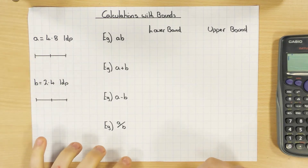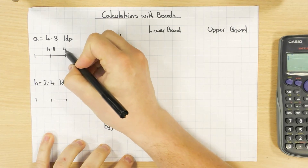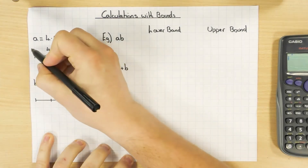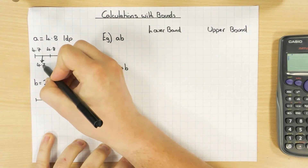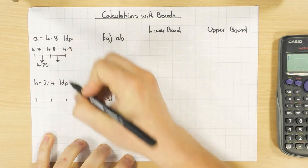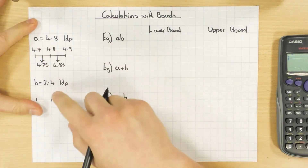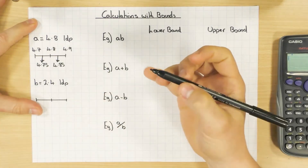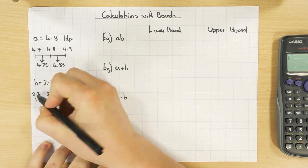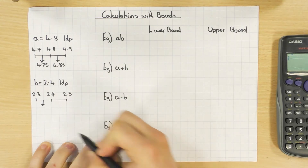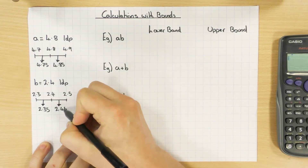For a = 4.8 rounded to one decimal place, we put 4.8 in the middle. Rounding up gives 4.9 and rounding down gives 4.7, so the lower bound is 4.75 and the upper bound is 4.85. For b = 2.4, rounding up gives 2.5 and rounding down gives 2.3, so the lower bound is 2.35 and the upper bound is 2.45.